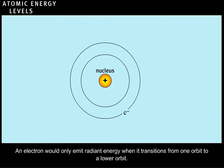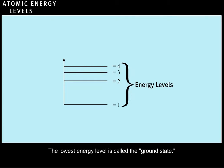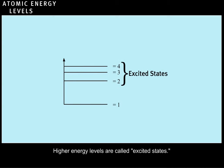An electron would only emit radiant energy when it transitions from one orbit to a lower orbit. The allowed orbits of the hydrogen electron in the Bohr model are commonly referred to as energy levels. The lowest energy level is called the ground state. Higher energy levels are called excited states.